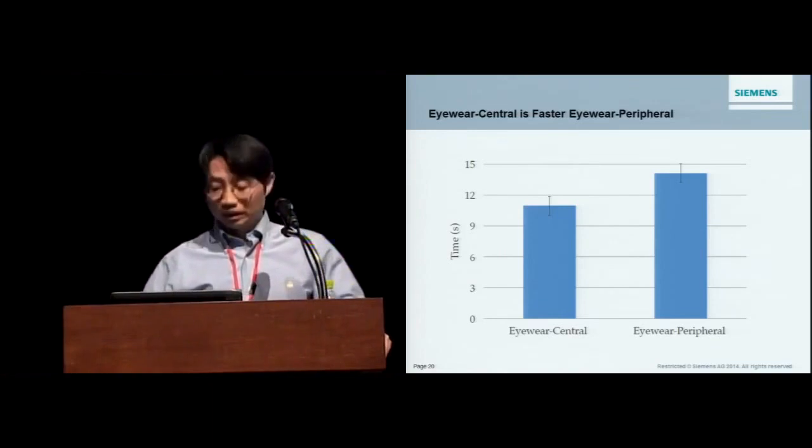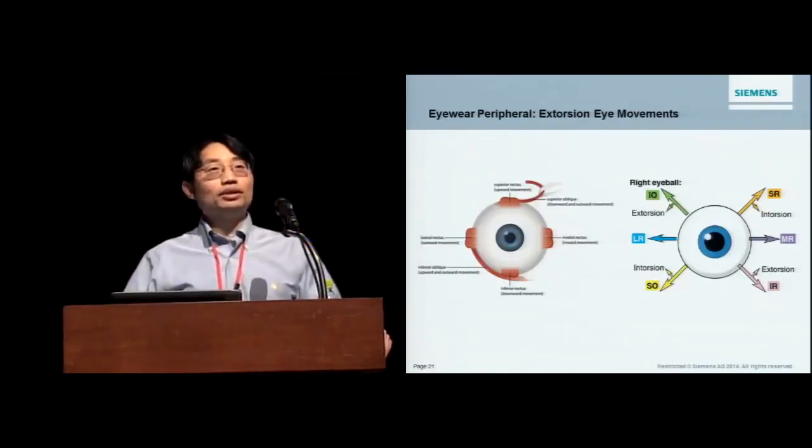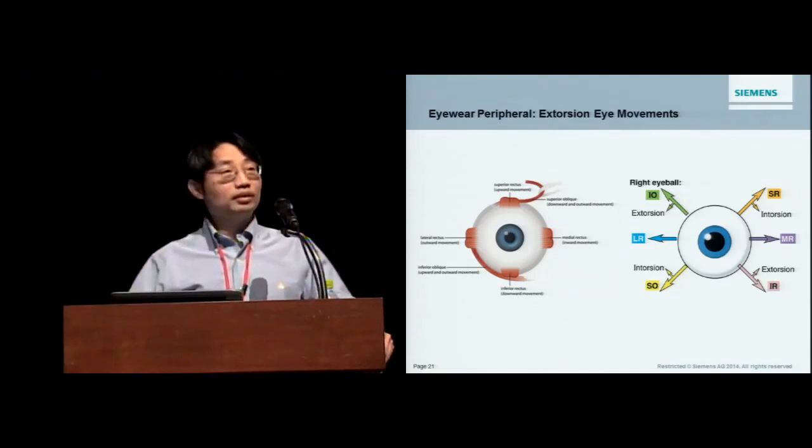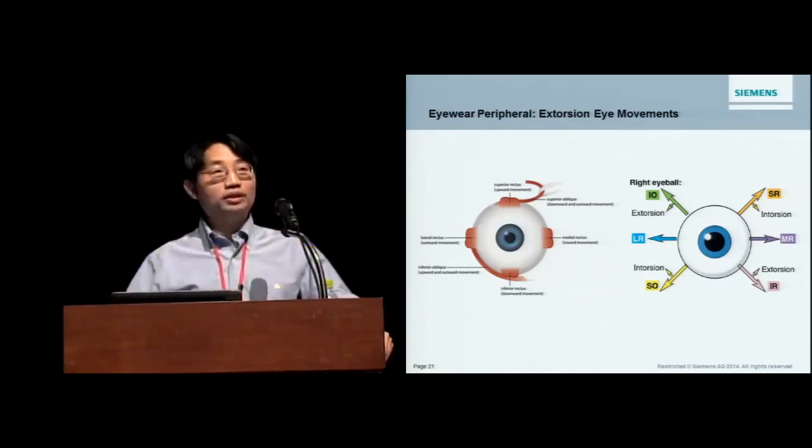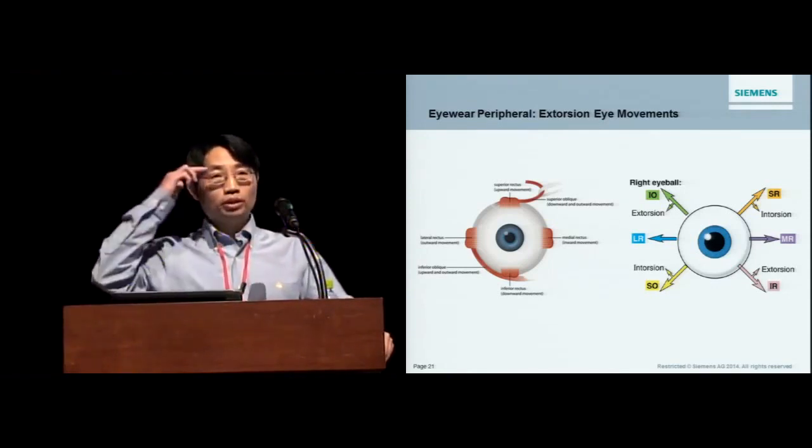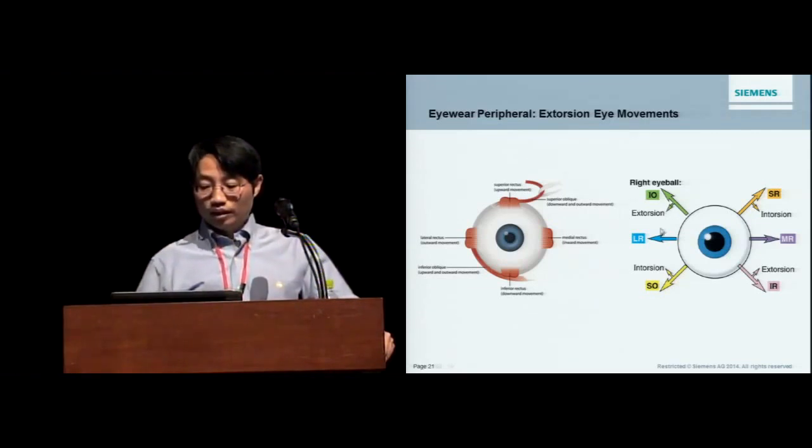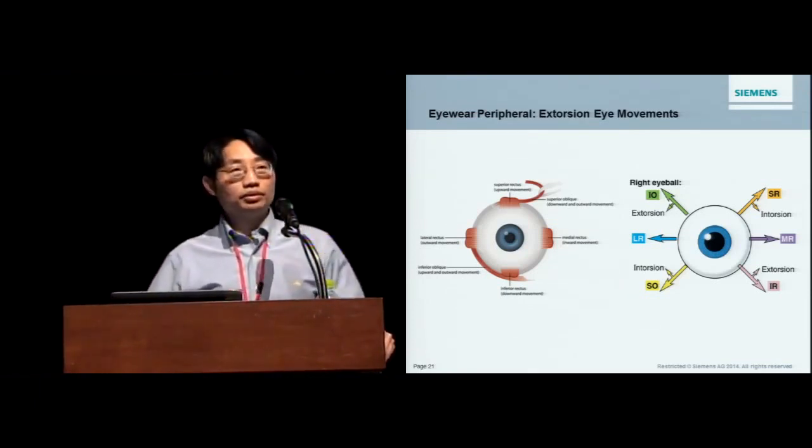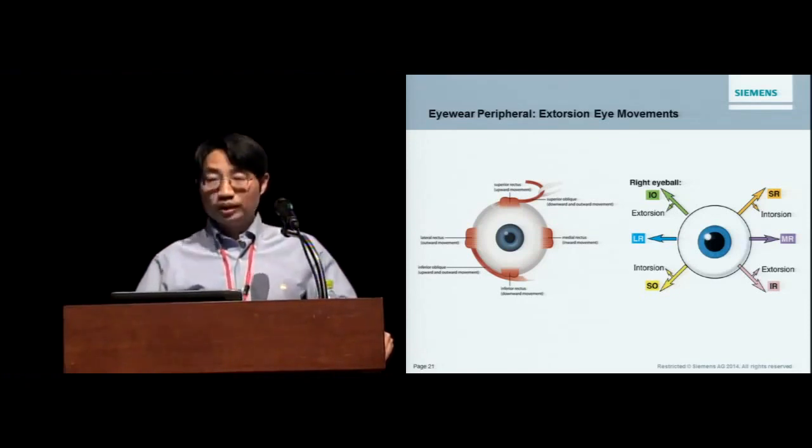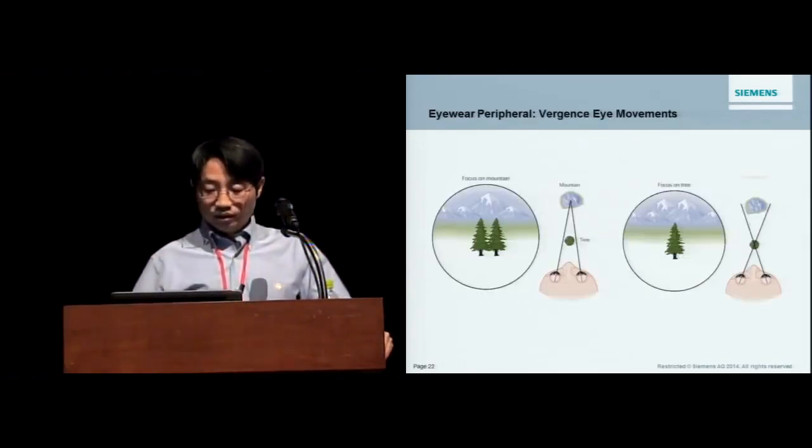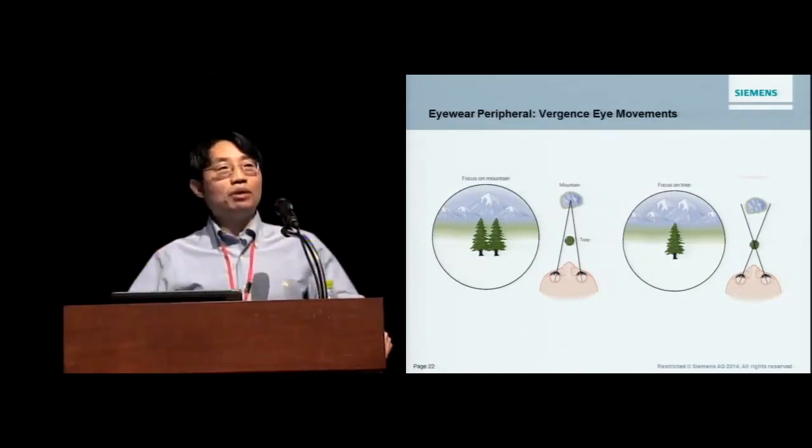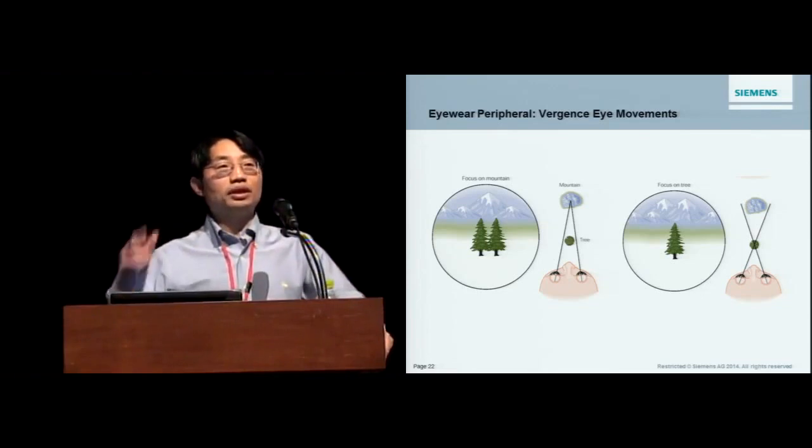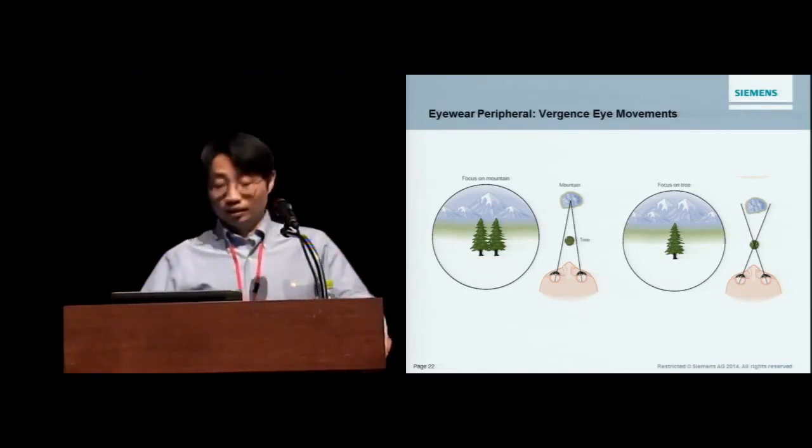So that actually came as a big surprise to us. So later, we're looking at how people's eye movements work. In order to look at the display, there are six different muscles that drive our eyes into different locations. And then the eye-wear peripheral, they purposely put the display in the upper corner. So it requires this eye movement called extorsion. So you pretty much have to move your eyes up and then hold it there in order to look at the information, which is an extremely uncomfortable situation. And then you cannot hold it for too long. And on the other hand, if you look at Epson Moverio or these eye-wear central glasses, pretty much people need to converge their eyes to look at the display information and then diverge their eyes to look at the real world. So apparently, people are much better at doing this.